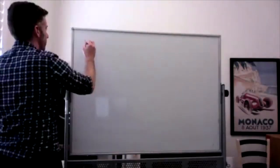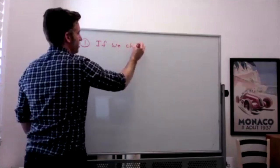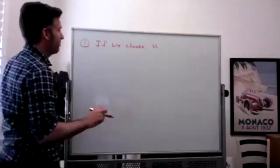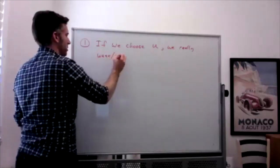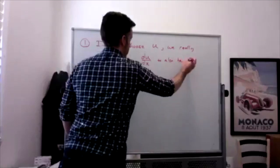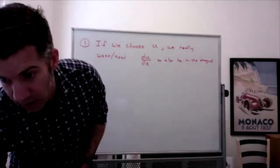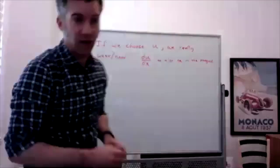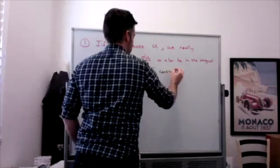So thing one: if we choose u to be something, whenever I say 'choose you' it makes you think of that Simpsons episode where Ralph says 'I choose you.' If we choose u, we really want — slash need — the derivative of u to also be in the interval. We really should say it's derivative up to a constant multiple. If you're off by a multiple of four or one-fifth or whatever, that's okay. We can always adjust for a constant multiple.